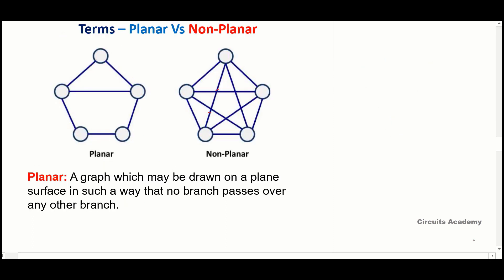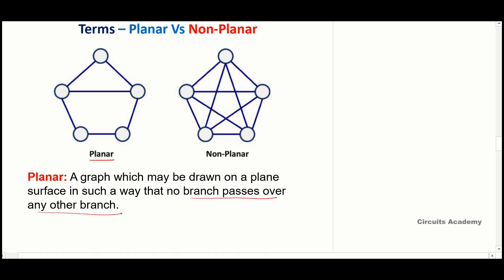Next we'll discuss common terminologies used in graph theory. First is planar versus non-planar graph. If you are able to draw the graph on a plane surface such that no branch crosses any other branch, then it is called a planar graph. In the graph shown here, you can notice that no branch crosses or passes over any other branch.